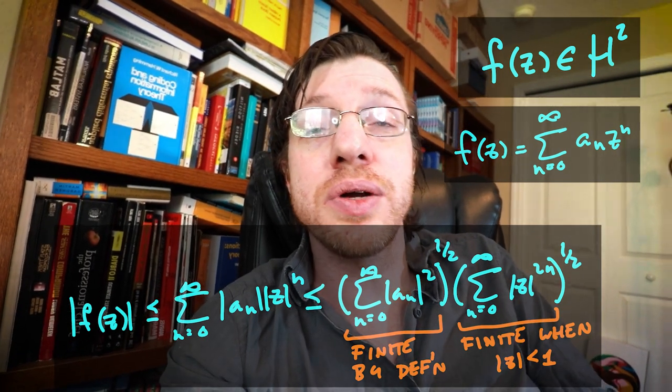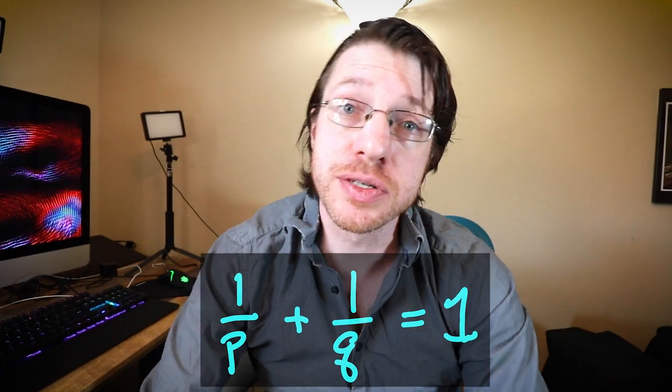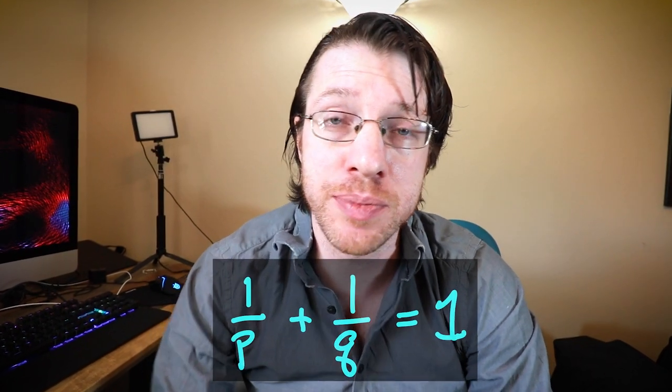And so it is actually absolutely convergent as long as your absolute value of Z is less than 1. But there's other inequalities that are closely related, and so this is the Holder inequality. It looks slightly different, but not too different. So the Holder inequality, it starts the same way as the Cauchy-Schwartz inequality. So keep in mind, you do need that 1 over P plus 1 over Q is equal to 1.